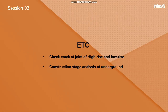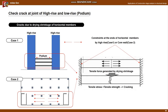Finally, I would like to introduce other engineering tasks that can use construction stage analysis. First, it is to check cracks caused by drying shrinkage of horizontal members. In the case of a horizontal member installed between high-rise buildings as in case 1, or between core walls as in case 2, strong restraint occurs at both ends of the horizontal member. Cracks occur when tensile force is applied by drying shrinkage, as shown in the figure on the right, causing problems in the serviceability and durability of the structure.